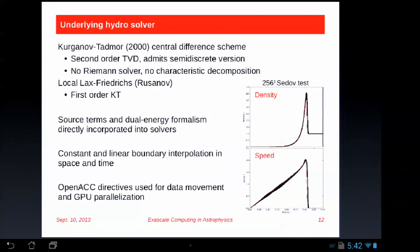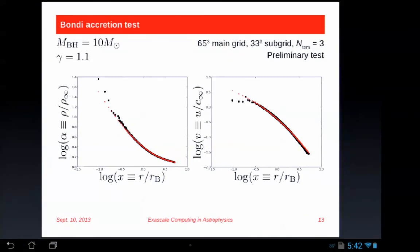Using OpenACC, in two days last week I took this from a purely CPU code and made it into a CPU plus GPU code. This is a very preliminary test — I am showing the smallest simulation at this conference: a 65-cubed main grid running on a single node. We're doing the Bondi accretion problem with parameter settings similar to those of Holtz, McKee, and Klein as a basis for the test.